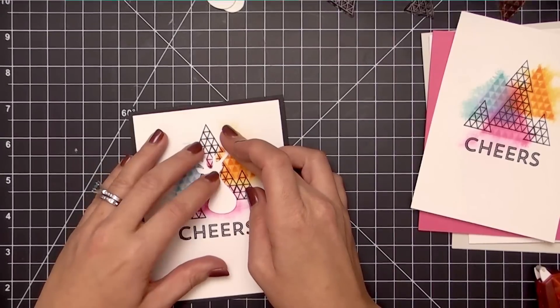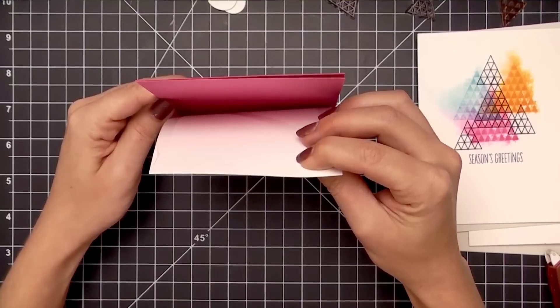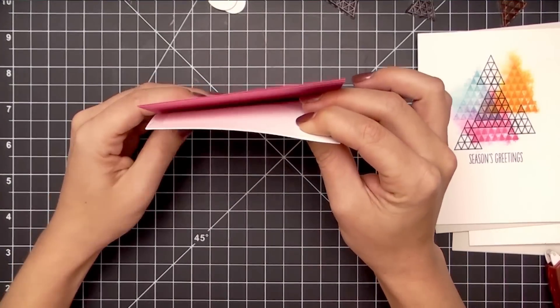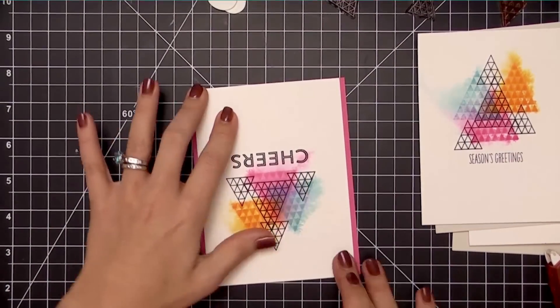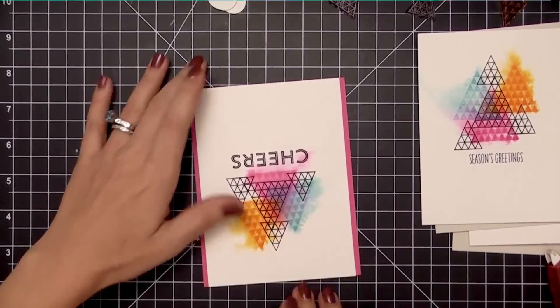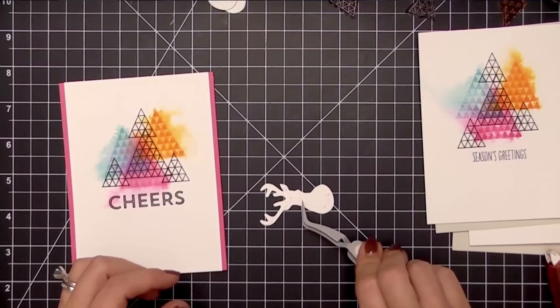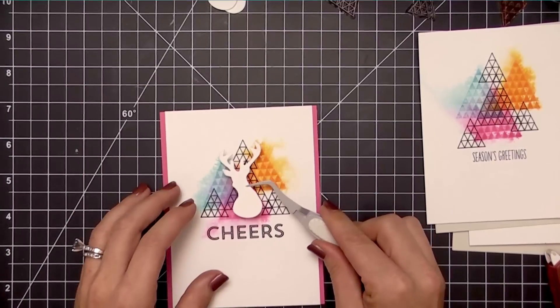Now if you're like me, mass production doesn't really excite you because I get bored creating the same thing over and over again. So I did pick out a couple different base card colors and I trimmed my panels down to either 4x5.25 inches or 4x5.5 inches.